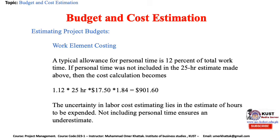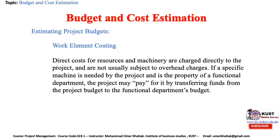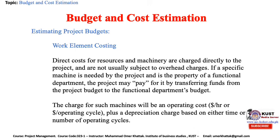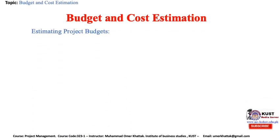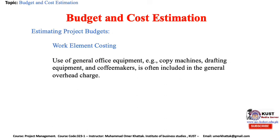Direct costs for resources and machinery are charged directly to the project and are not usually subject to overhead charges. If a specific machine needed by the project is the property of a functional department, the project may pay for it by transferring funds from the project budget to the functional department's budget. The charge for such machines will be an operating cost plus a depreciation charge based on either time or number of operating cycles. Use of general office equipment such as drafting equipment and copying machines is often included in the general overhead charge.